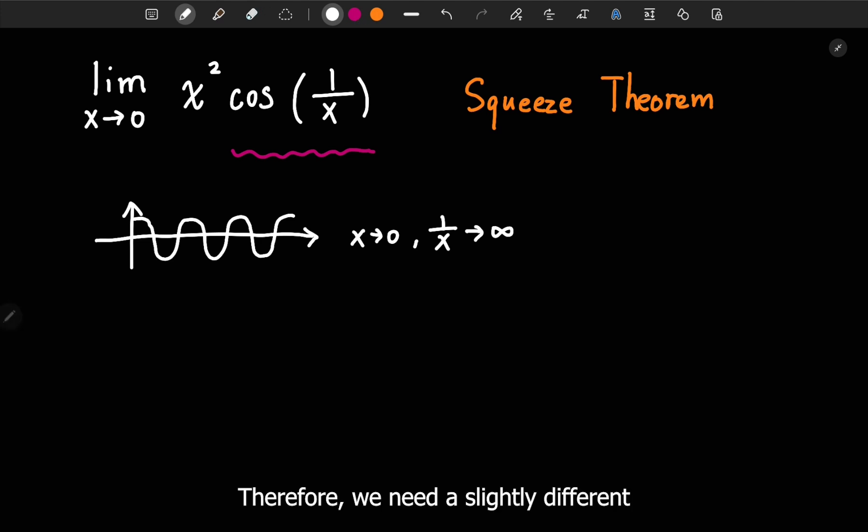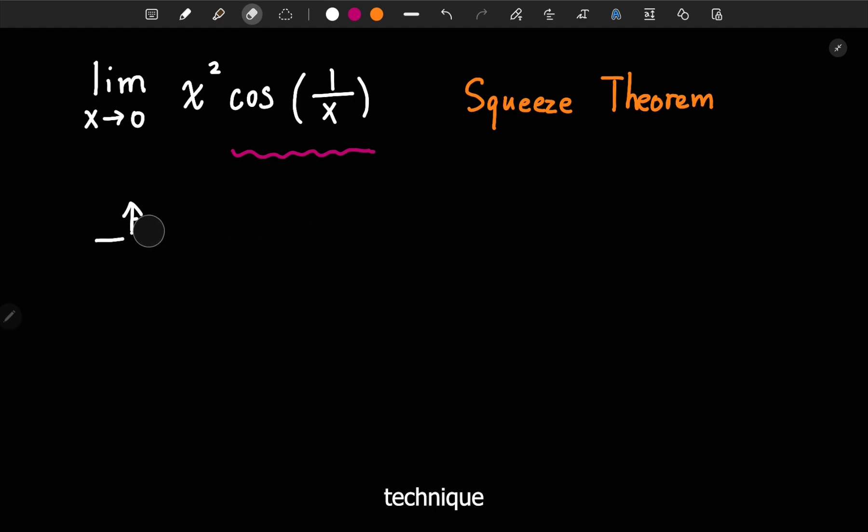Therefore, we need a slightly different technique. Here, we also have x squared in front of cosine function. So this x squared helps us bound this limit, or in other words, to set some kind of boundary to allow us to use the squeeze theorem.